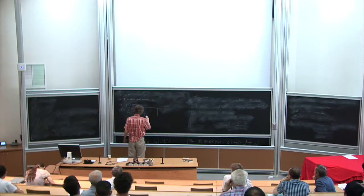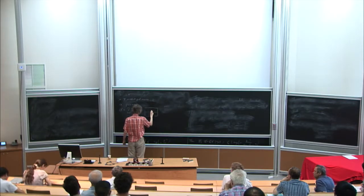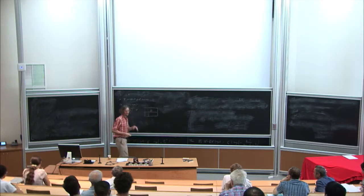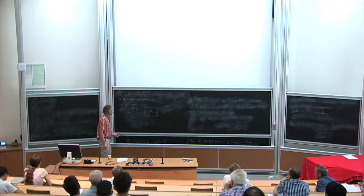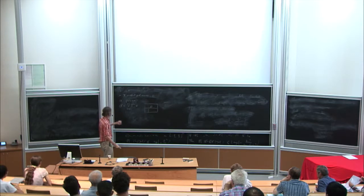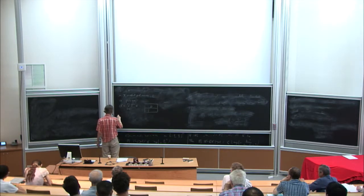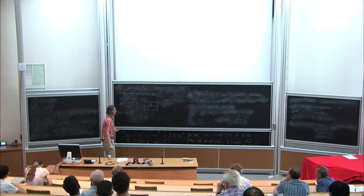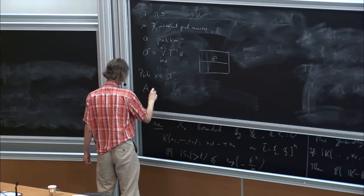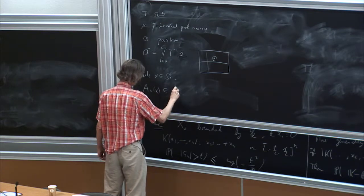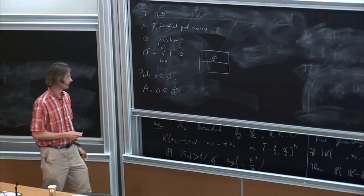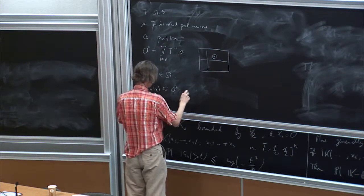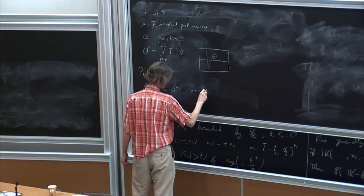Then you want to fix a point and look at the partition elements. As n gets bigger, these partitions become smaller, cylinders become smaller and smaller. So you pick an x in omega and you want to look at the A_n of x, which is an n cylinder, namely the one that contains x.